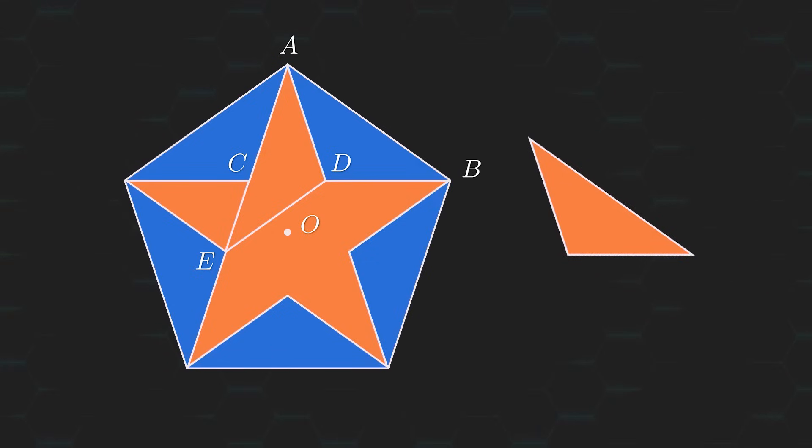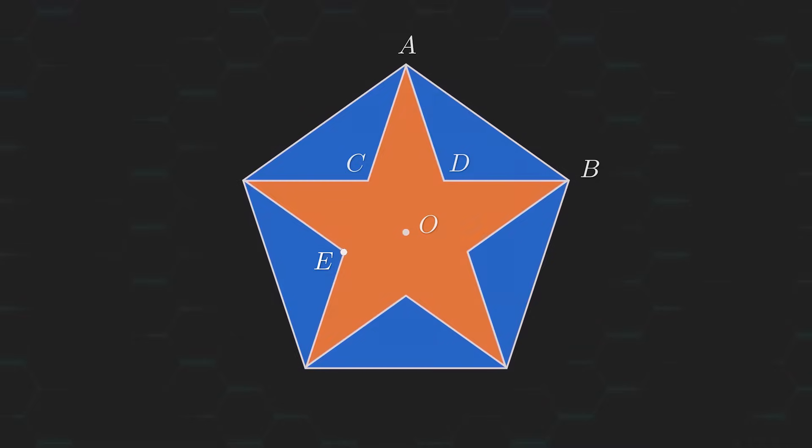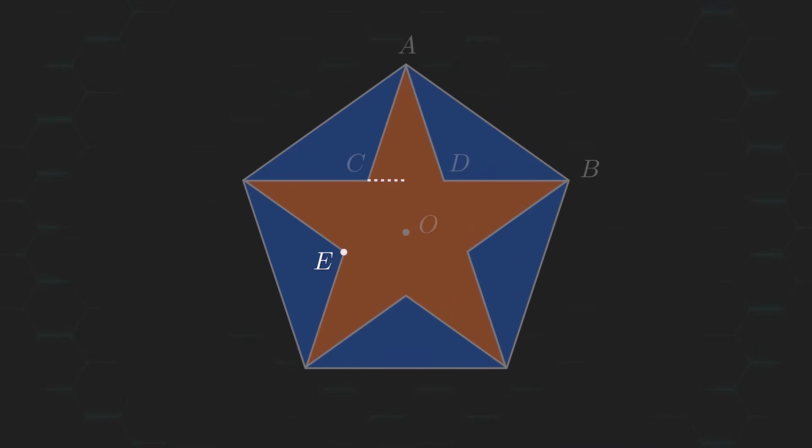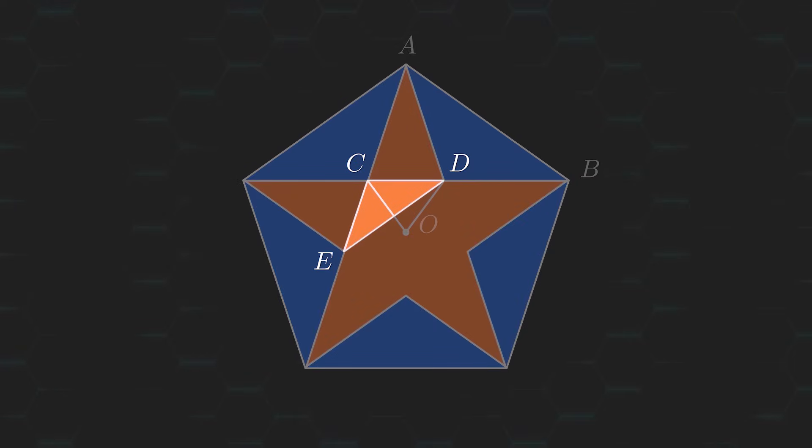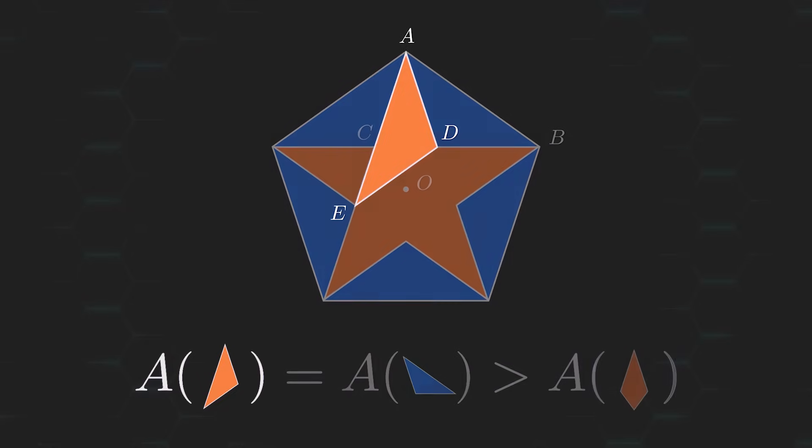Now, you might be wondering what exactly this is supposed to accomplish. Well, notice that the point E is clearly further away from the line CD than the origin is, and so this tiny triangle, CDE, must have a greater area than the triangle CDO. And thus, the triangle ADE, which we just showed has the same area as DAB, must have a greater area than the quadrilateral ACOD.